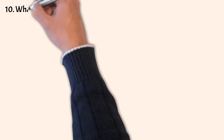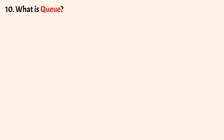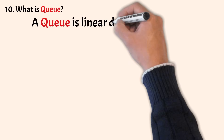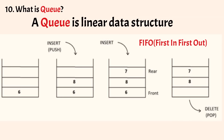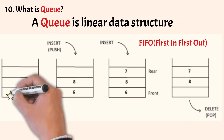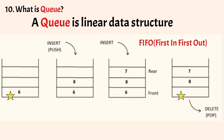What is a queue? A queue is a linear data structure that follows a particular order known as FIFO — first in, first out — where the first element inserted will be the first one removed. In a queue, insertion is done at the rear end, whereas deletion is done at the front end.